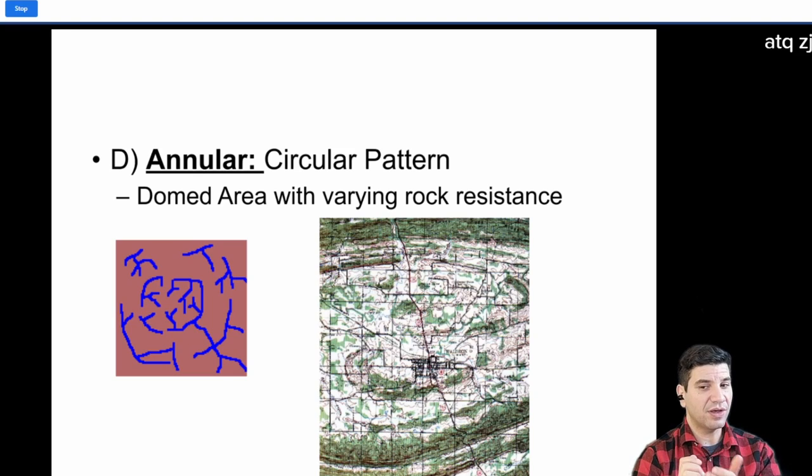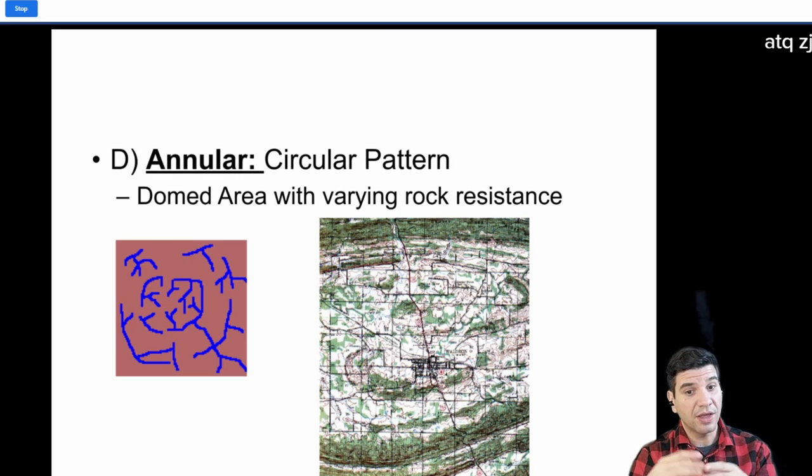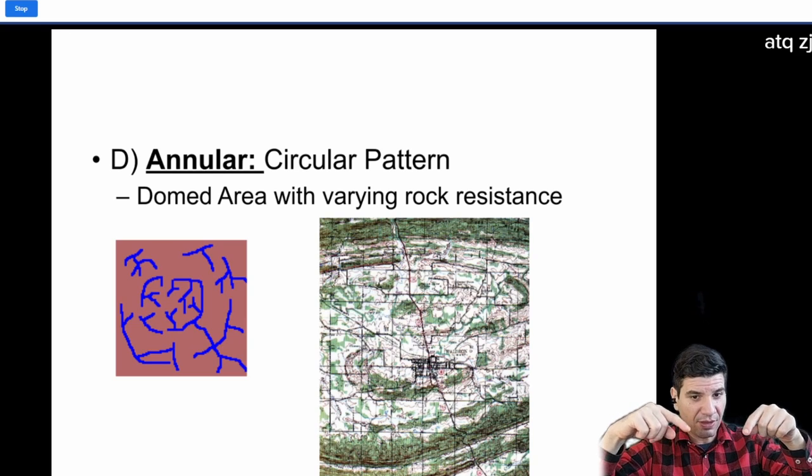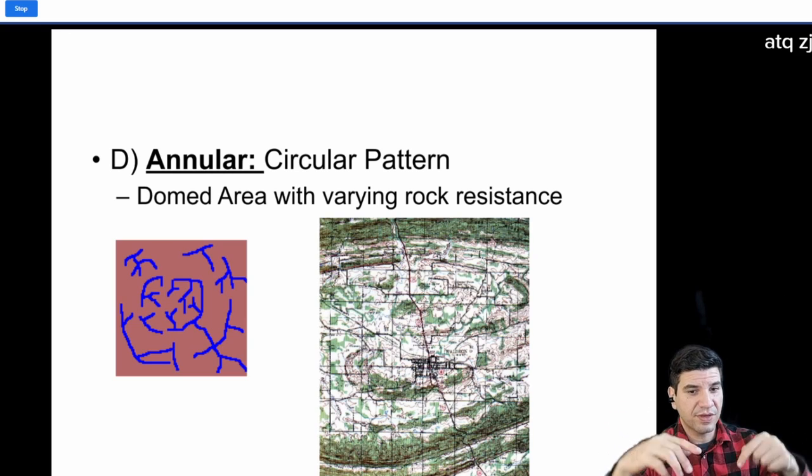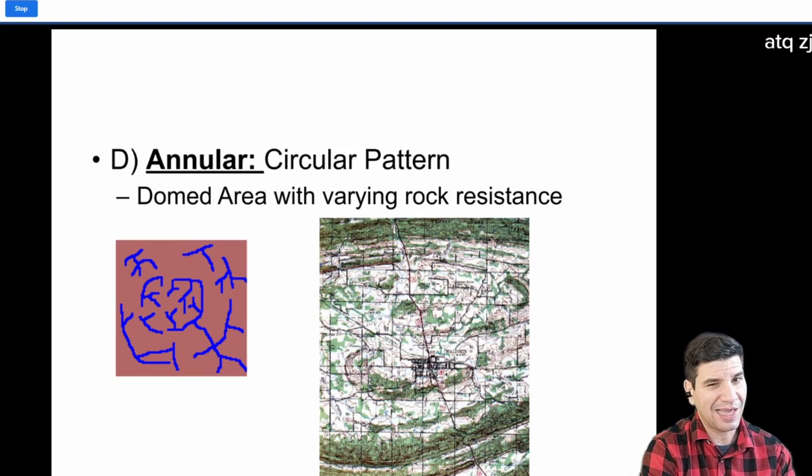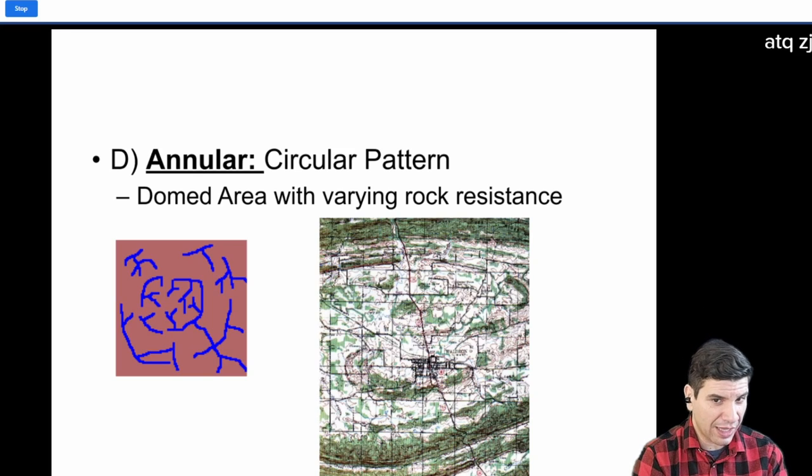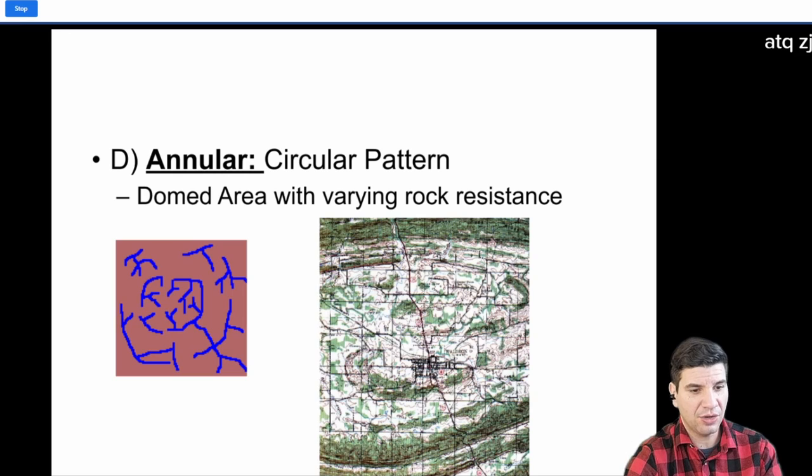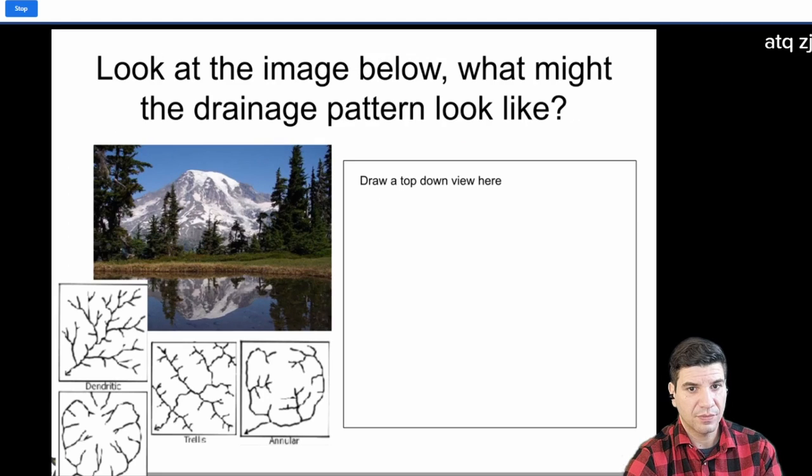If you have a hill that was pushed up and the bedrock surrounding it is weaker, that weaker bedrock will erode away and it'll make these semicircular rivers. It's kind of like a bullseye, almost. Now, if you look at the word annular, I believe in Latin, annular means around the outside of something. Well, that's kind of what we're looking at here.